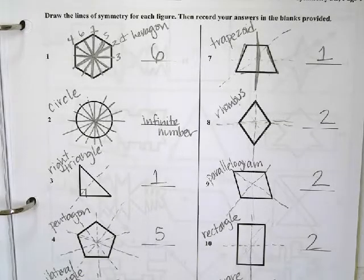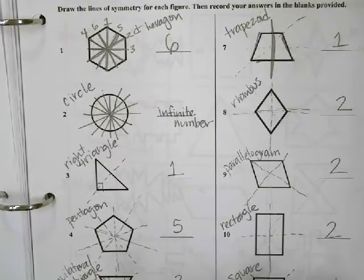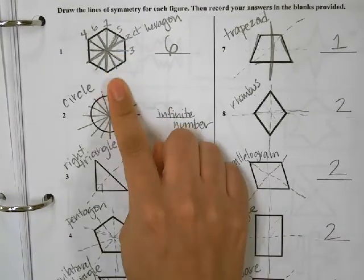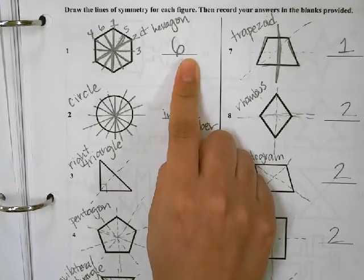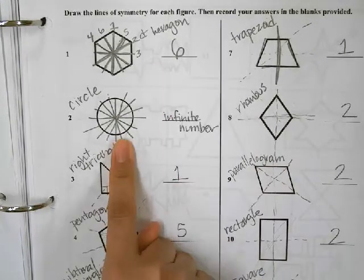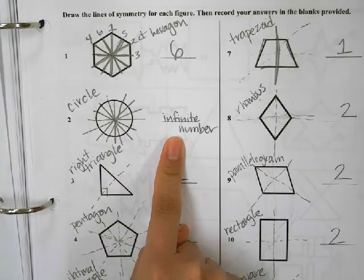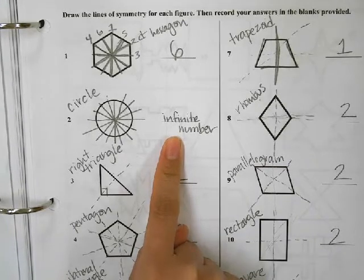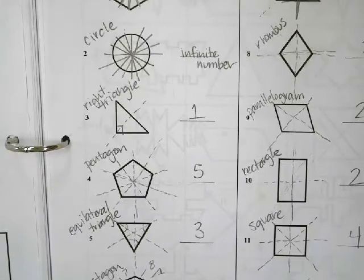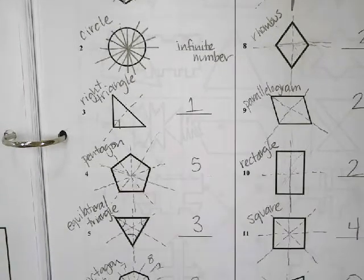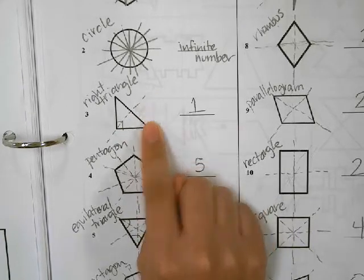We used that as reference. We noticed a pattern: a hexagon has six sides and also six lines of symmetry. A circle has an infinite number—there's no specific number of symmetrical lines for a circle. This triangle has only one, even though it has three sides. A pentagon has five lines of symmetry and five sides, so we saw that correlation.